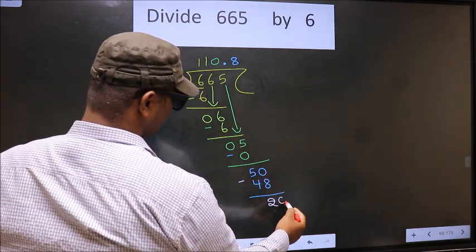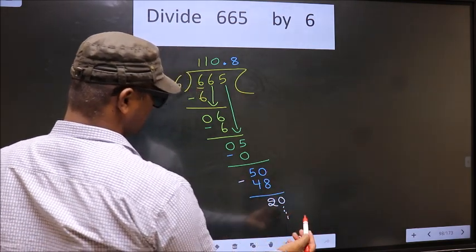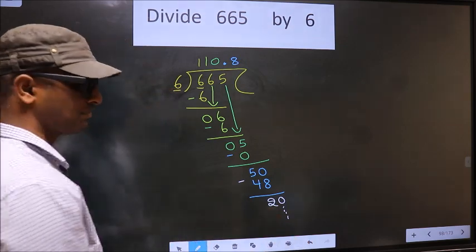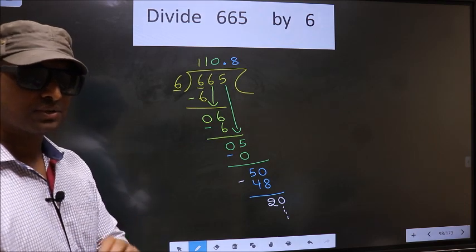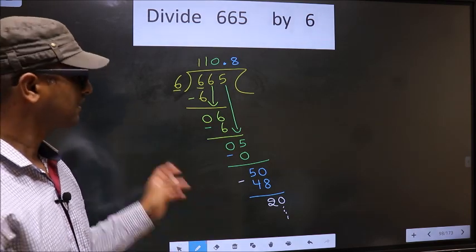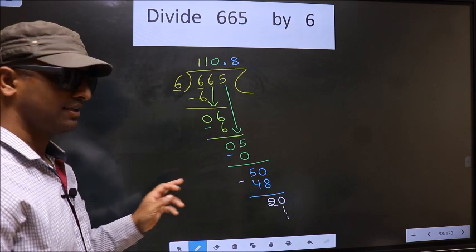Now you subtract, you get 2. We already have decimal, so take 0 and continue the division. I am not doing that. Did you understand where the mistake happens? You should not do that mistake. Am I clear?